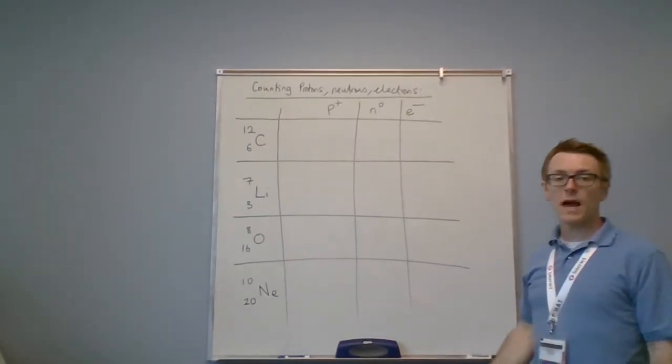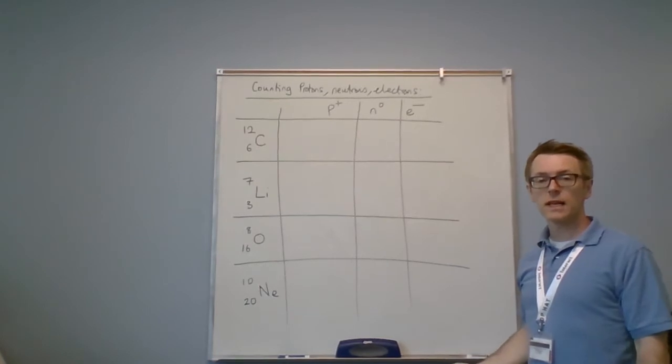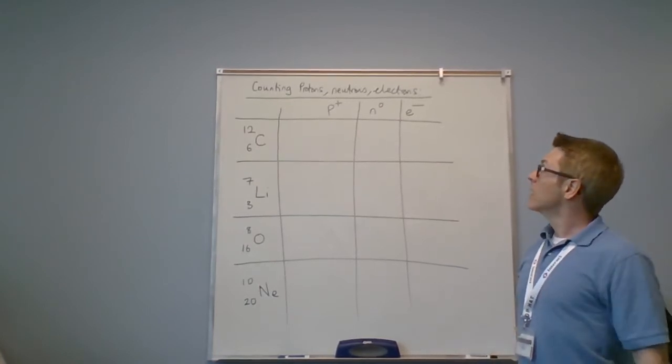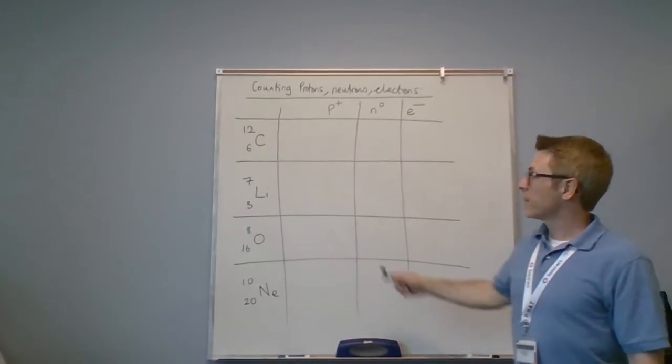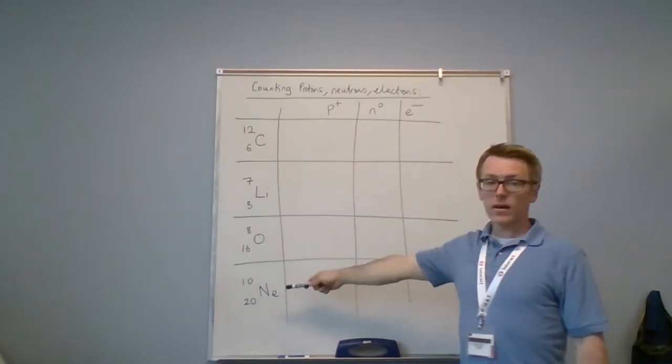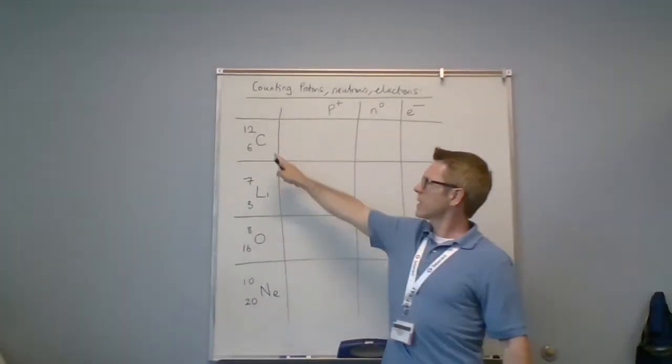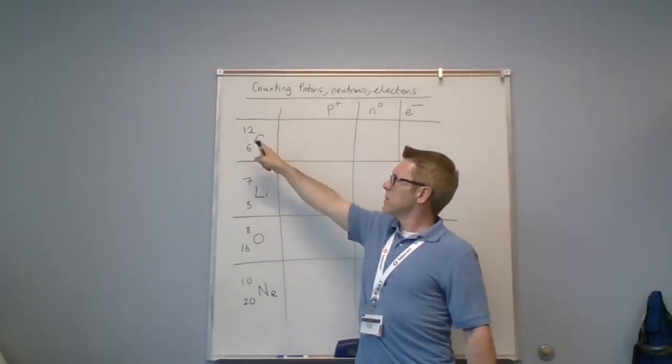In this video we're going to learn how to count protons, neutrons, and electrons for any element. I've already set up a grid with four elements from the periodic table: carbon with the numbers 12 and 6.